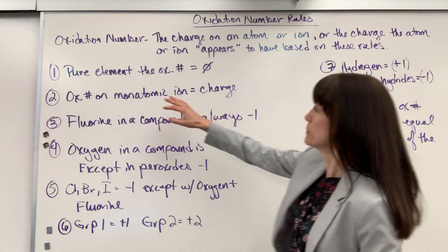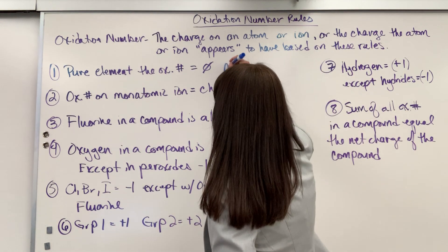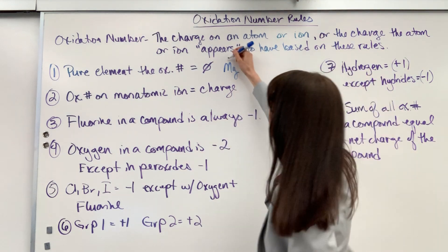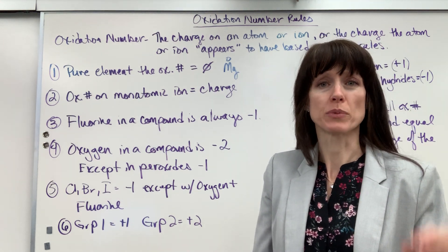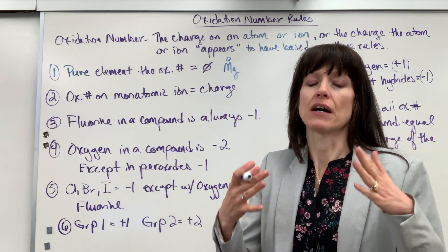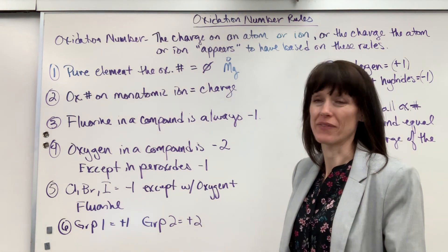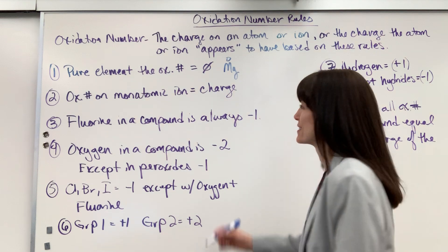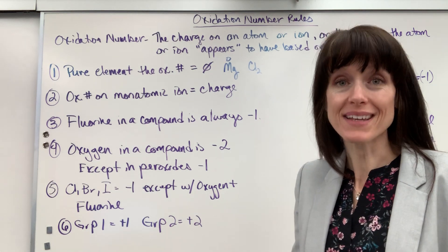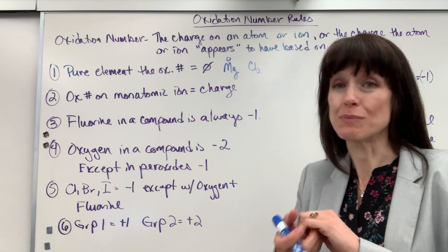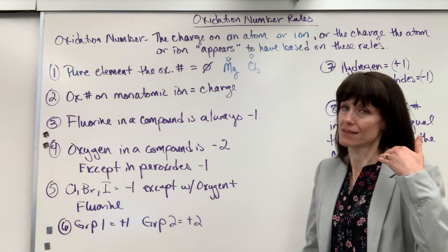Rule number one: pure elements always have an oxidation number of zero. Take magnesium by itself — that is an oxidation number of zero. Always write your oxidation number small right above the atom. Don't be fooled by diatomic elements like chlorine (Cl2). It's the element by itself, but remember there are seven elements that always bond to themselves and have a buddy — those are diatomic elements. This is also a zero because it's chlorine by itself.